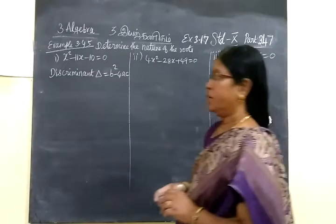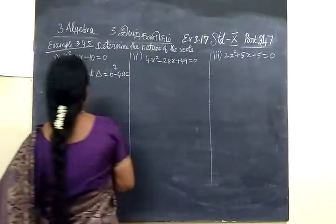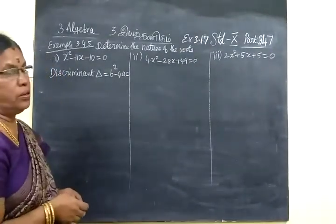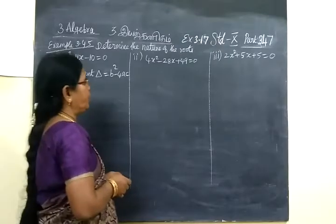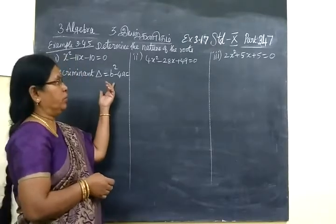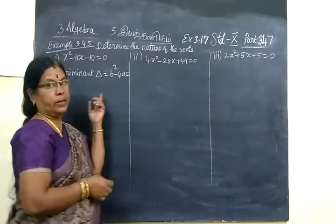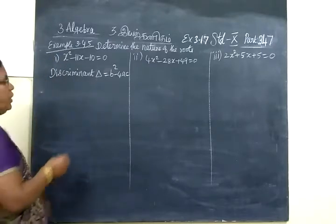Now we want to see example 3.45. We are going to find the nature of the roots for the quadratic equation. Here, three quadratic equations are given. We want to find the nature of the roots.